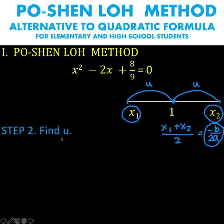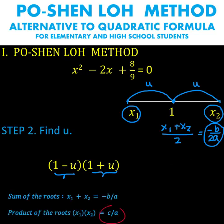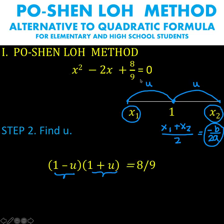Our next step is to find the value of u. Based on our diagram, we represent the two roots x sub 1 and x sub 2 as follows: x sub 1 equals 1 minus u, and x sub 2 equals 1 plus u. We know that the product of these two roots equals c over a, which is 8 over 9. Notice that the left-hand side is a special product resulting in a difference of two squares.